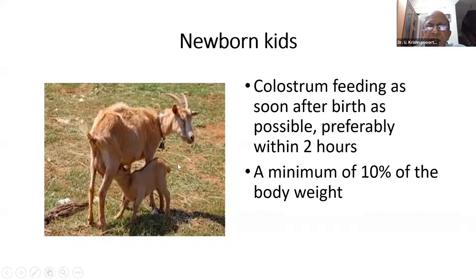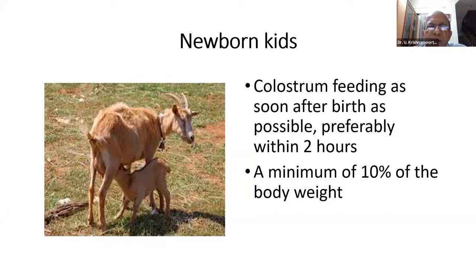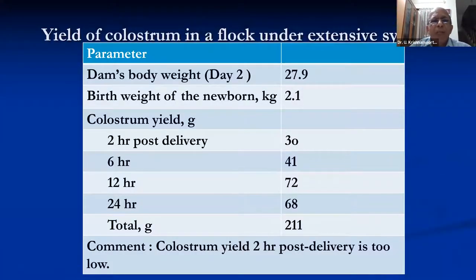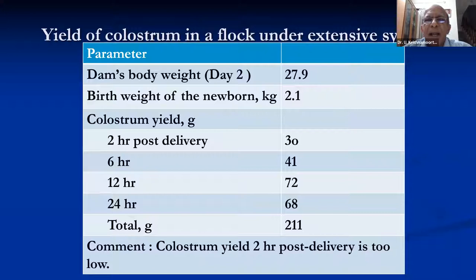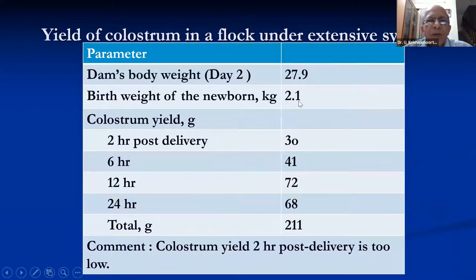Beyond two hours, as time lapses between birth and colostrum intake is prolonged, immunoglobulins are not going to be absorbed because of enzyme activity. The intestines are more porous at the beginning and the sooner the colostrum the better. The first milk after delivery is the colostrum — anything produced afterwards does not contain as much immunoglobulin as the first milk. The quantity the young one gets is very important — it should get about 10% of its body weight. In one study the does' body weight was about 27.9 kg and birth weight of the newborn was 2.1 kg.